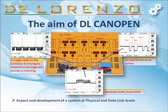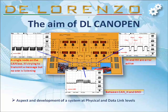The DL CANOPEN allows, with the aid of some tools — integral or external parts — to verify the aspect and development of a system at physical and data-link levels. At physical level, the DL CANOPEN allows the analysis of differential signals, noise immunity, and the effect of a badly wired network. At data-link level, it allows the analysis of exchanged packets and of the times of response to stimuli and controls.